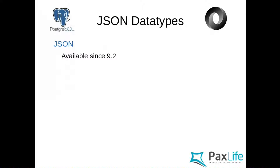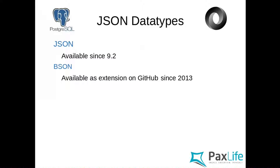JSON data types in Postgres have been available since version 9.2, which is several years ago. There was also a BSON extension — originally done by MongoDB — available on GitHub since 2013, which had a better JSON implementation than Postgres had at the time. I played a lot with it when using Meteor, even changing Meteor to use Postgres instead of MongoDB for full ACID compliance, using the BSON data type. It was experimental hacking — never published because of bugs.